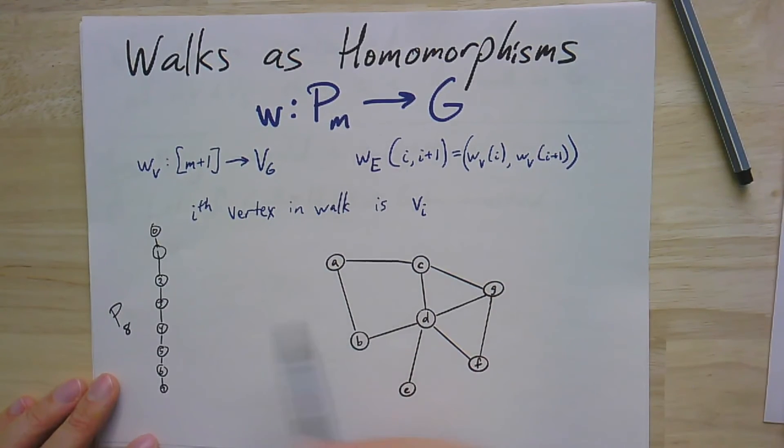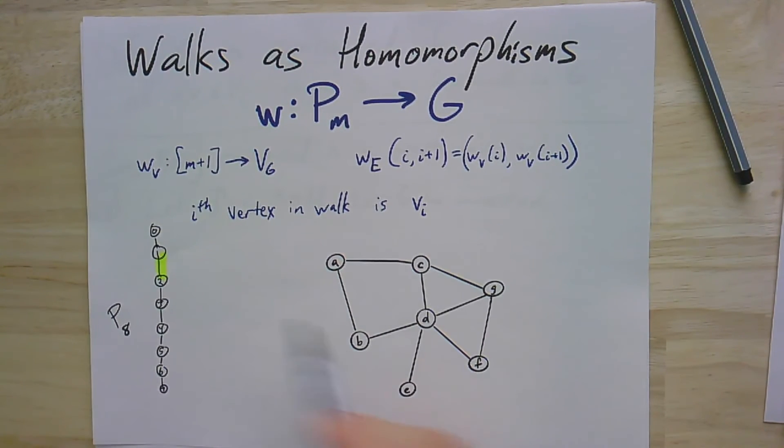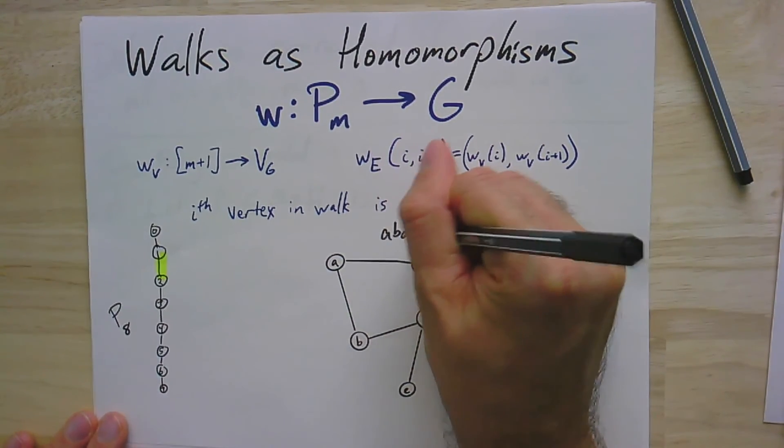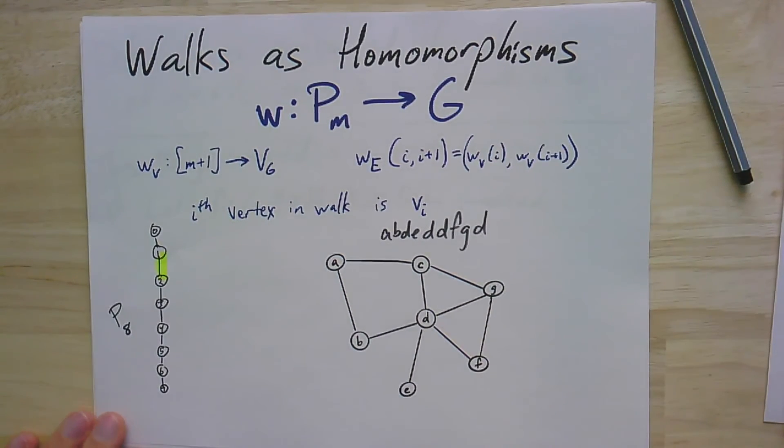If, in fact, it's a homomorphism, then it has to be that every one of these edges, like for instance edge one, two here, has to map to an edge. So I think if I looked at the path I had, if I recall, it was a, b, d, e, d, f, g, d. Actually, I didn't recall that. I just copied it from over there. And of course, I copied it wrong. I put two d's in a row there.